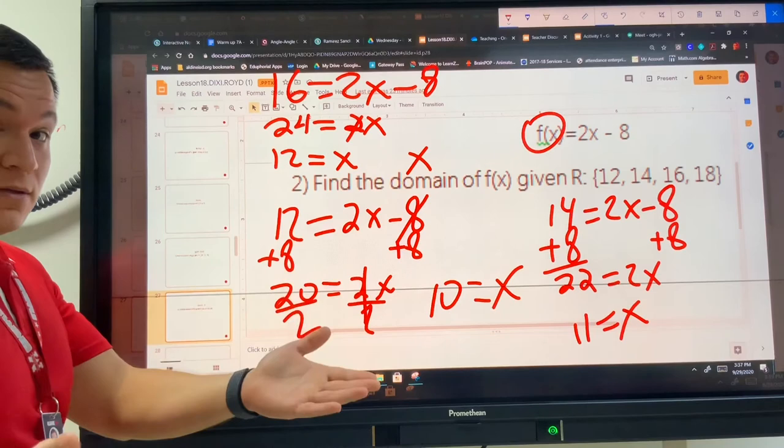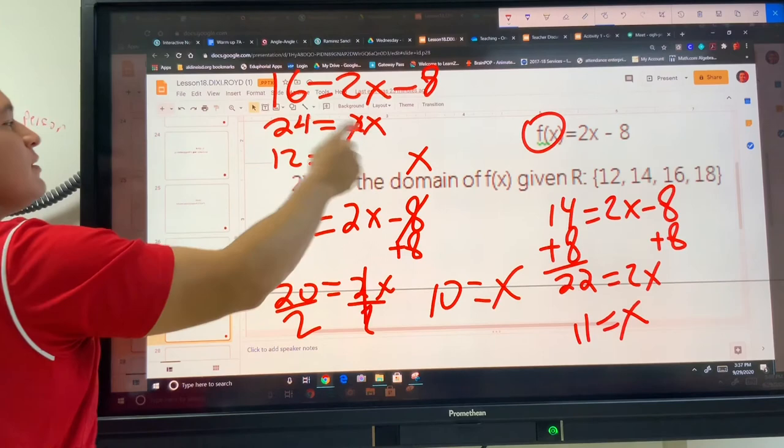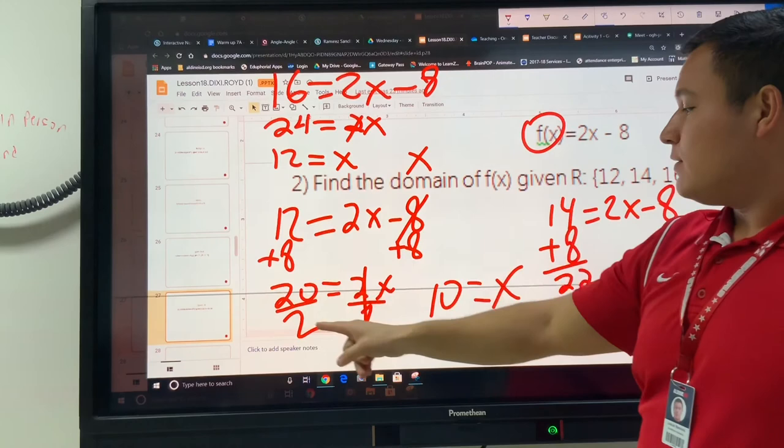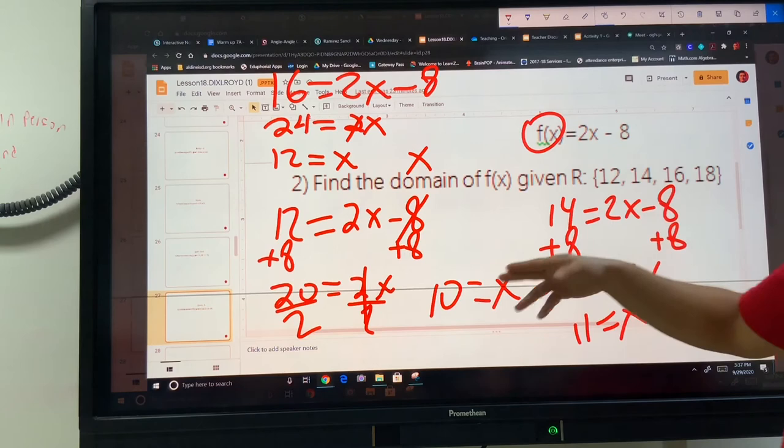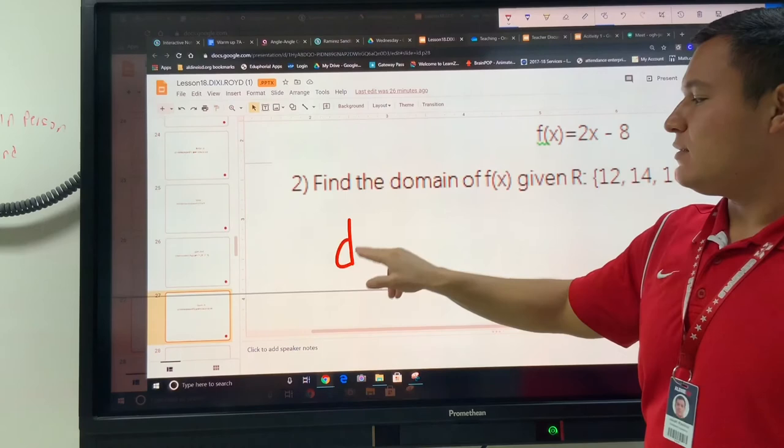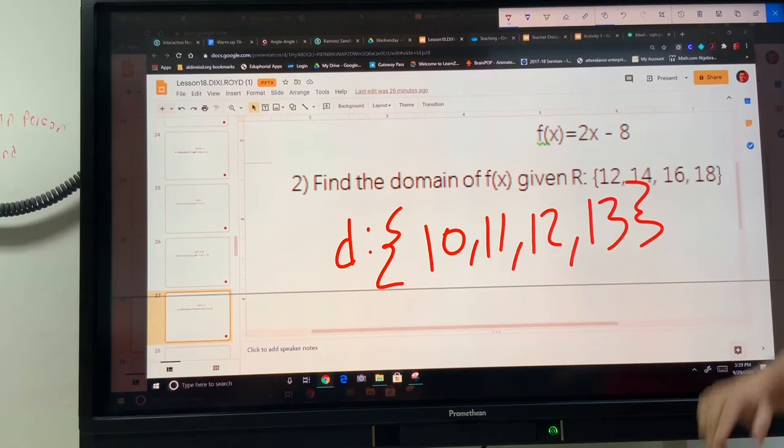If you need to, then go ahead and do it. But eventually, this will be all that you need. You just need to show, if I move the 8, it's going to show up over here. If I divide the 2, it's going to show up over here. So our answers were 12, 10, and 11. So we have 10, 11, and 12. Based off of this pattern, we can tell that the next one is going to go up by one more. 18 is going to be 13 for x. Which means the domain will be 10, 11, 12, 13.